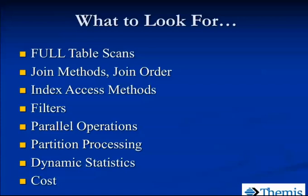We'll look for full table scans, join methods, different index access methods. We'll also look at filters — what's in your where clause and when do those filters get applied: before joins or after joins? That's important. We'll check if any part of the execution ran in parallel — certain parallel operations might just happen on their own based on parameter settings, or we might need to get the optimizer to consider those through a hint. There are parallel hints we can use in our SQL code. And we'll look at table partitioning, object statistics, and the overall cost of the plan.